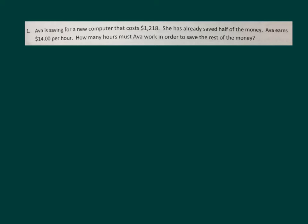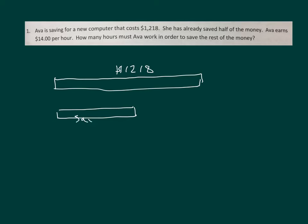Let's draw a picture to help us solve this problem. She's saving up for the computer that costs $1,218. She's saved half of the money so far. If she saved half the money, we take half of $1,218.